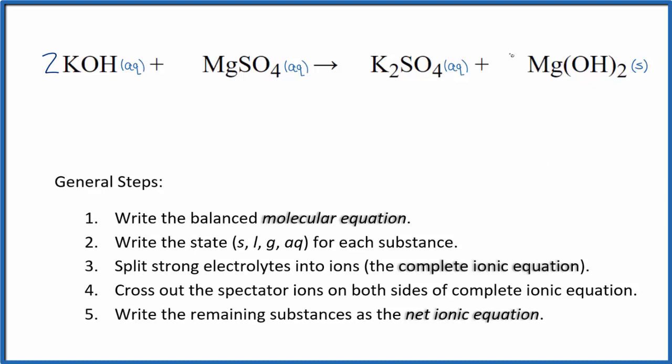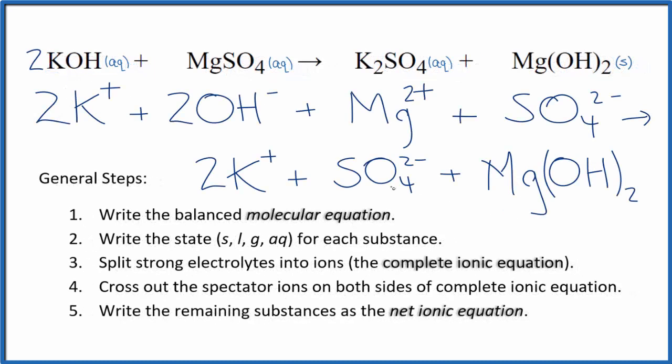When we write the net ionic equation, we don't split solids up. Now we can split the strong electrolytes into ions. And again, we're not going to split the solid up. That'll look like this. So this is the complete ionic equation.